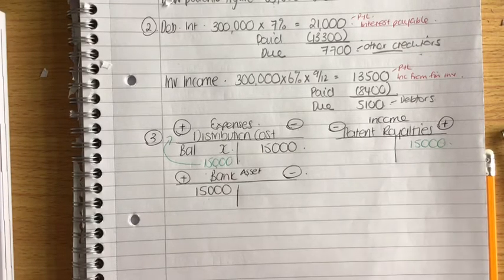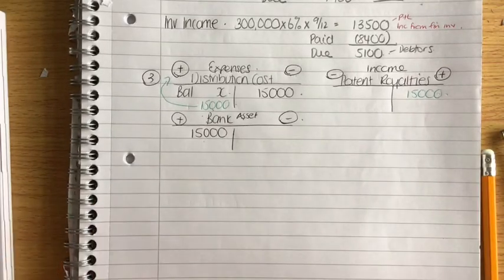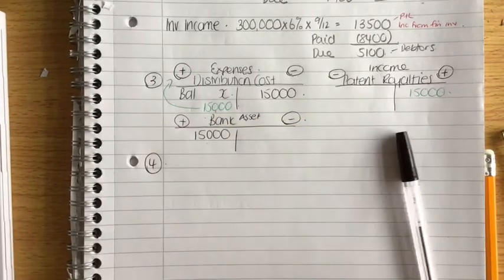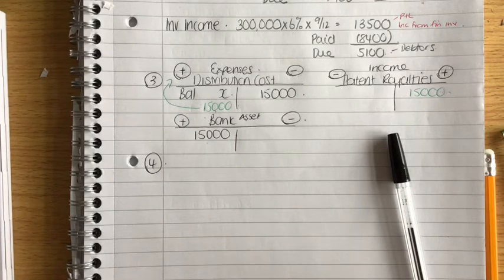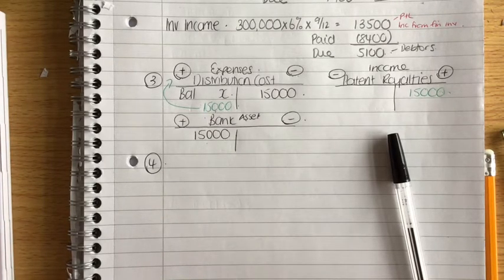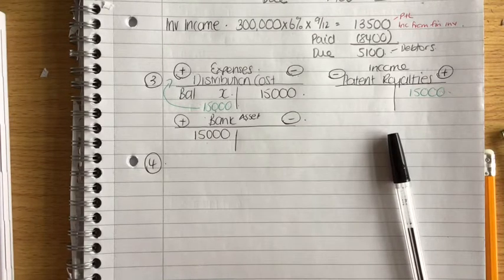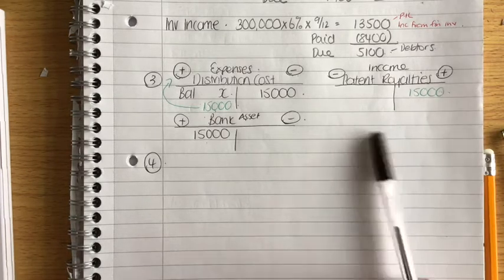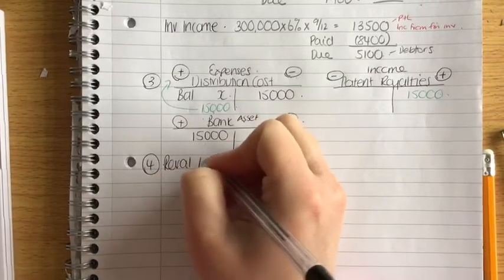The land sale: land costing 80,000 was sold for 167,000, giving an exceptional item profit of 87,000 in the profit and loss. Then combining the revaluation and building depreciation workings together.